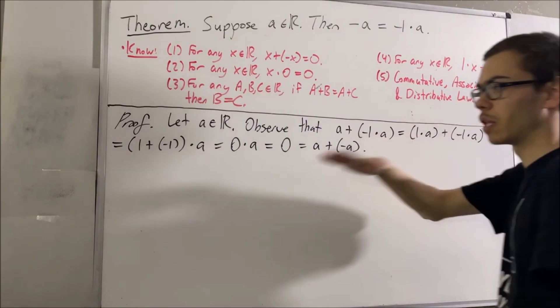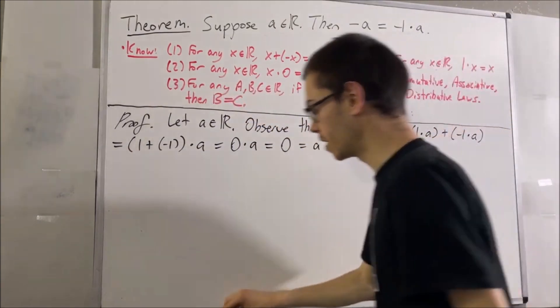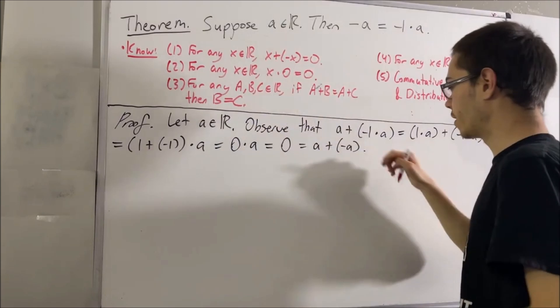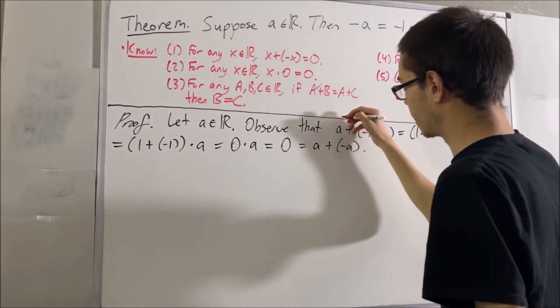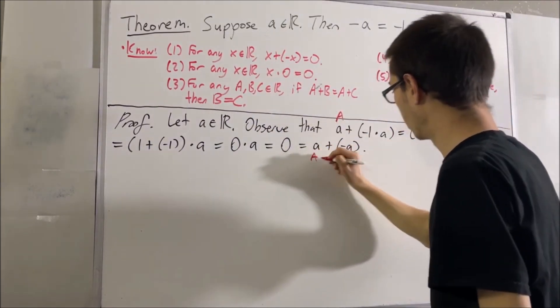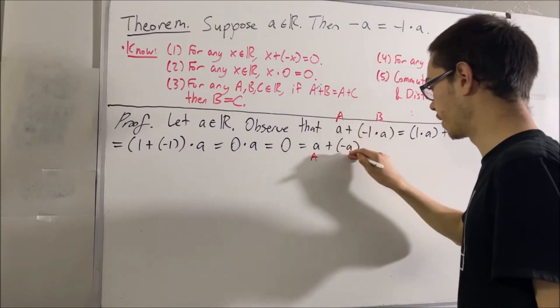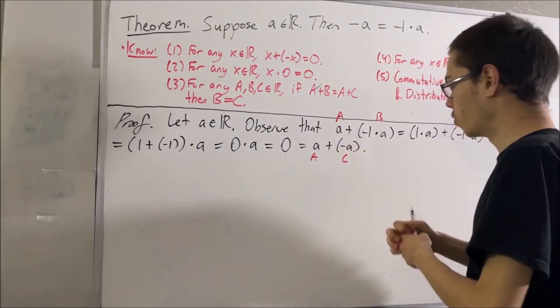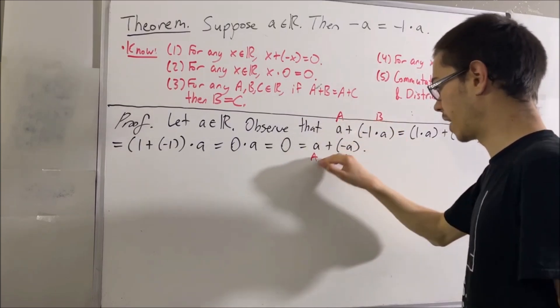Now, we're going to apply the cancellation law of addition. And to see how we can do that, we can think of our lowercase a as our capital A. We can think of this as our capital B and think of this as our capital C.